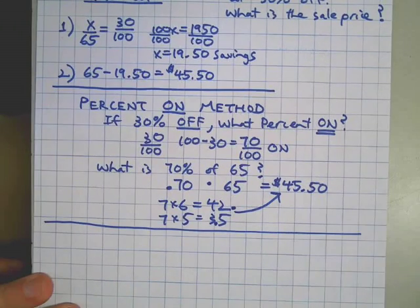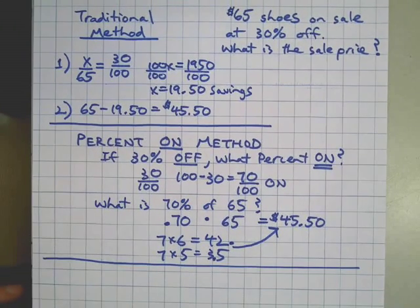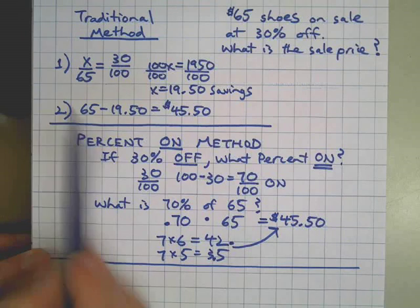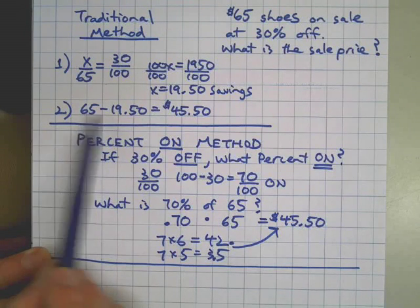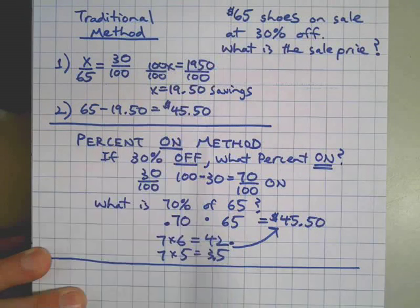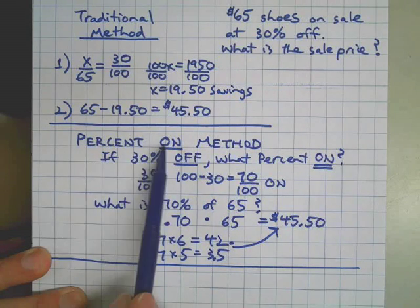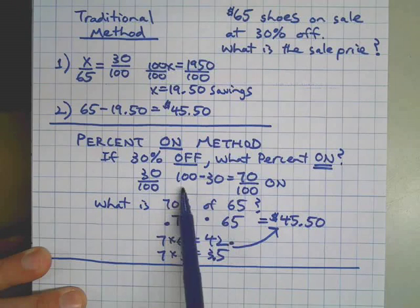Okay, it's still two steps, but the difference is: in the traditional method we did the proportion first and then a subtraction using the amounts from the prices. Down here on the percent on method, we did the subtraction first.